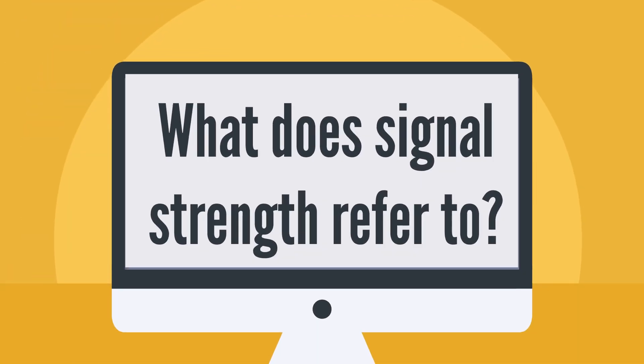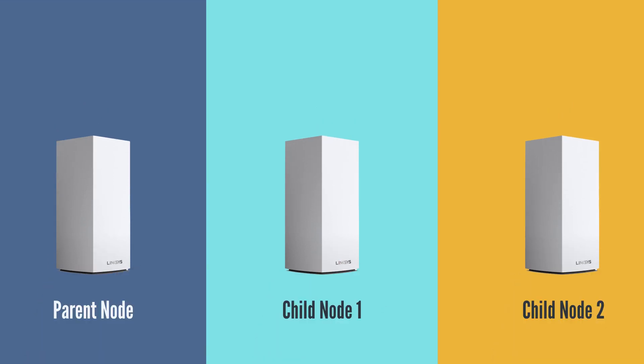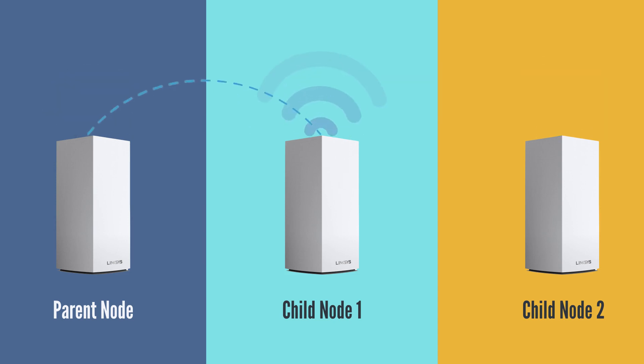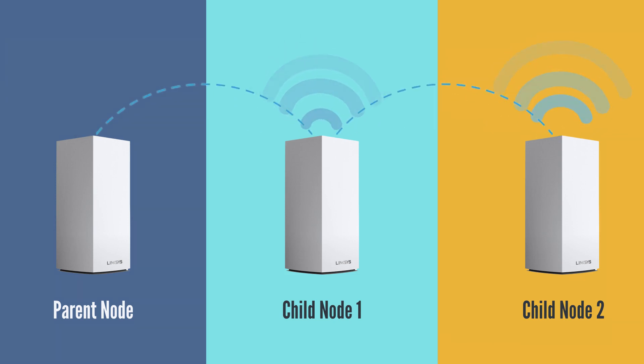What does signal strength refer to? Your mesh Wi-Fi is made up of multiple nodes where each node houses antennas that emit Wi-Fi waves. Signal strength refers to how well a node hears the signal from another node.